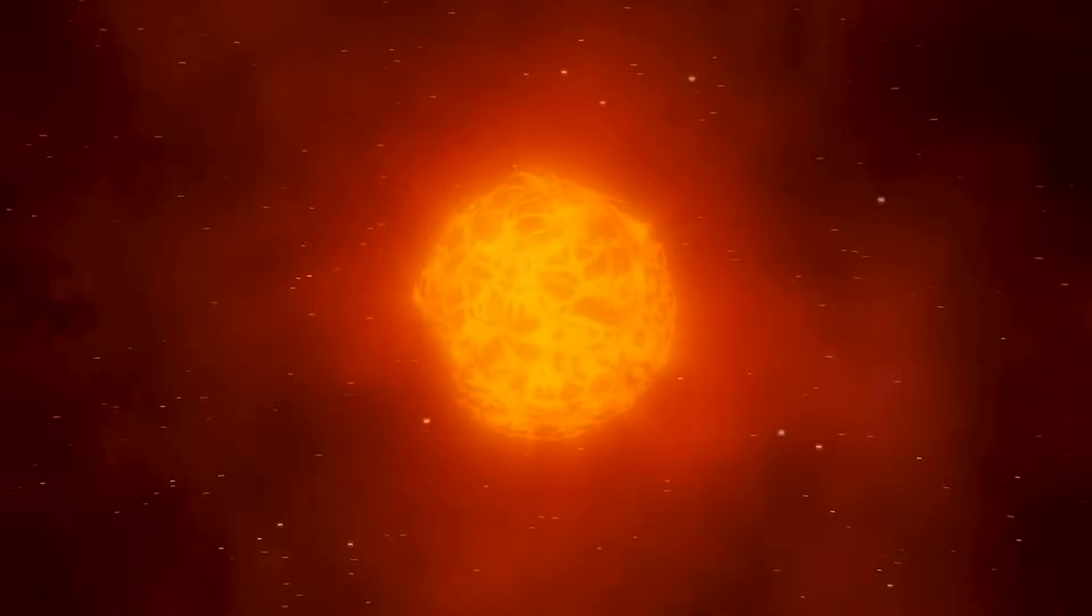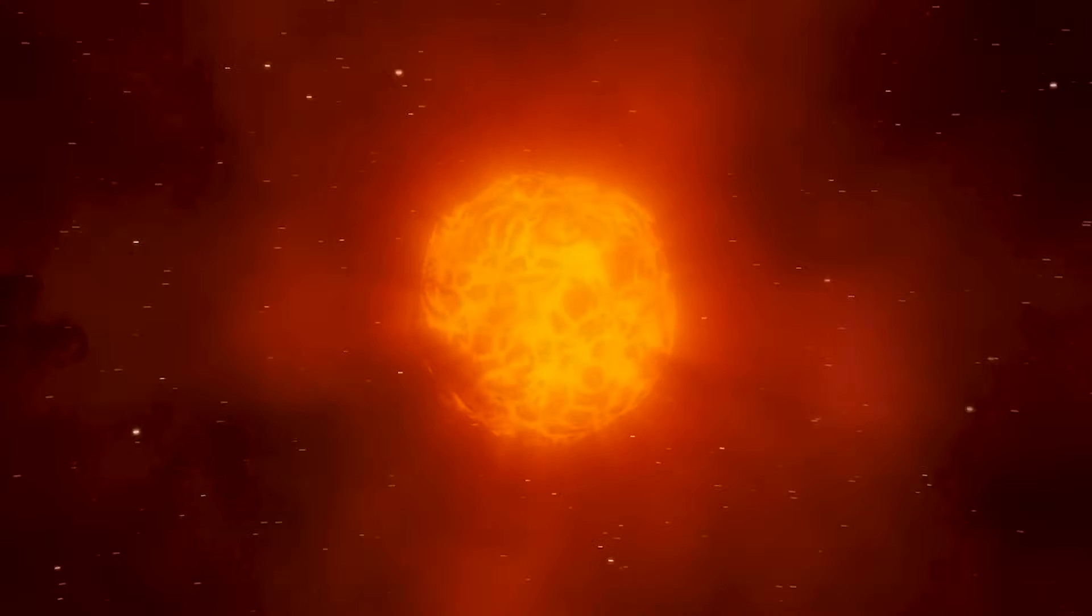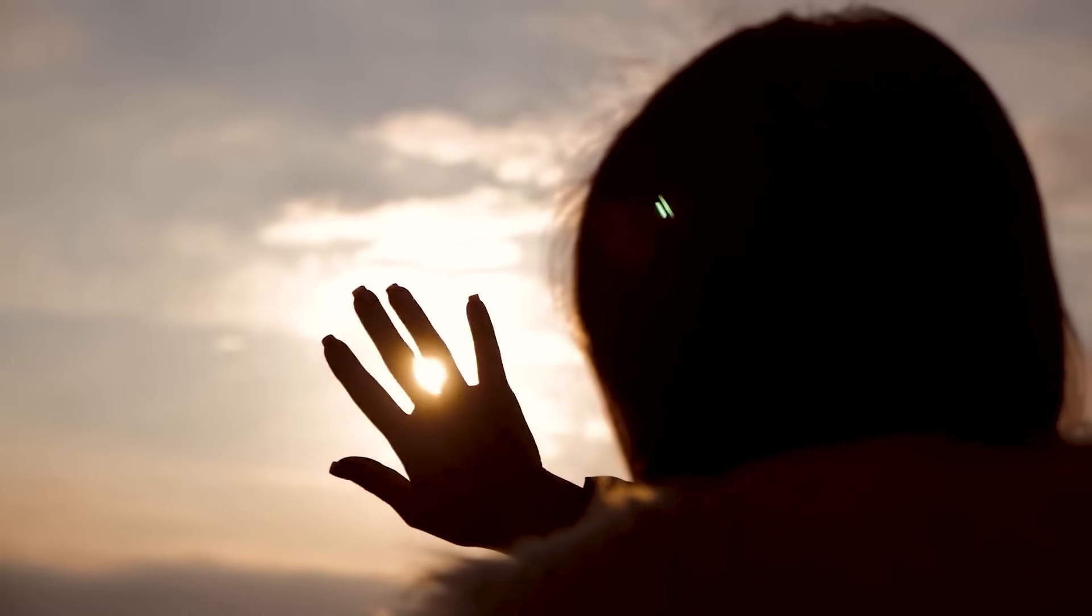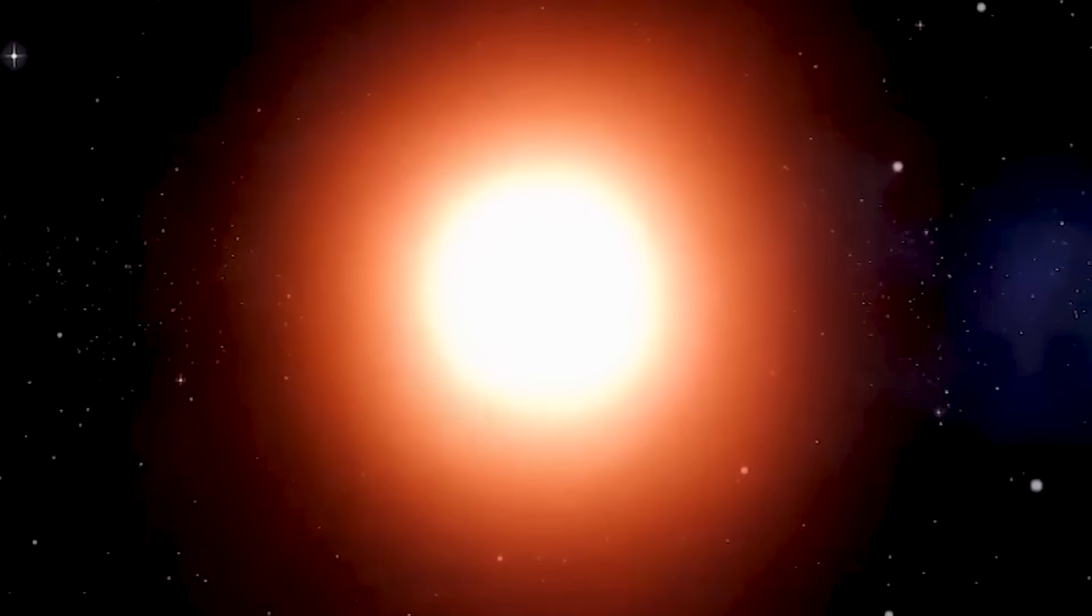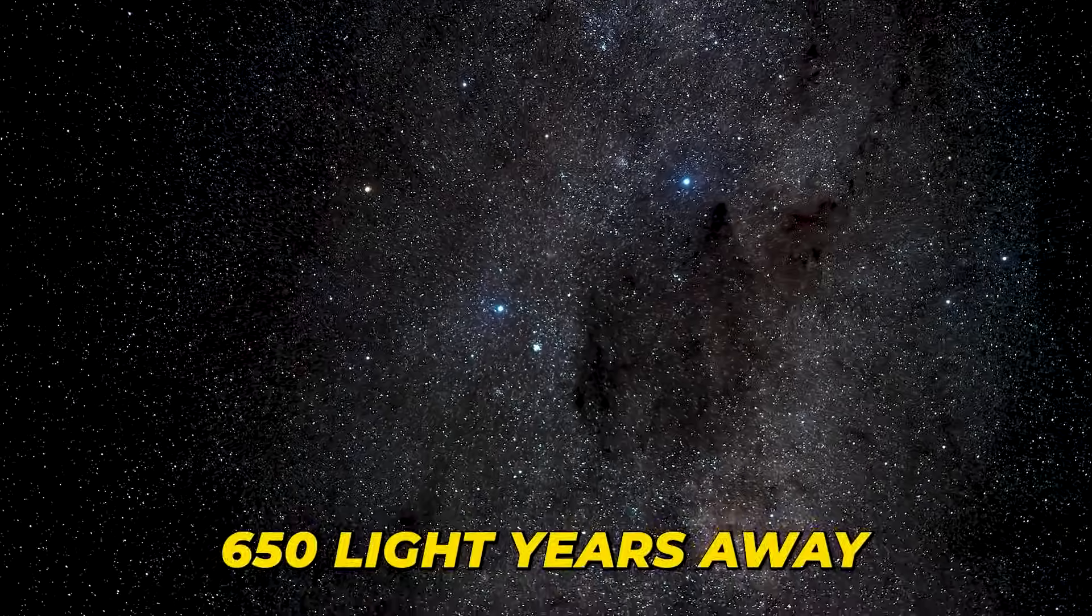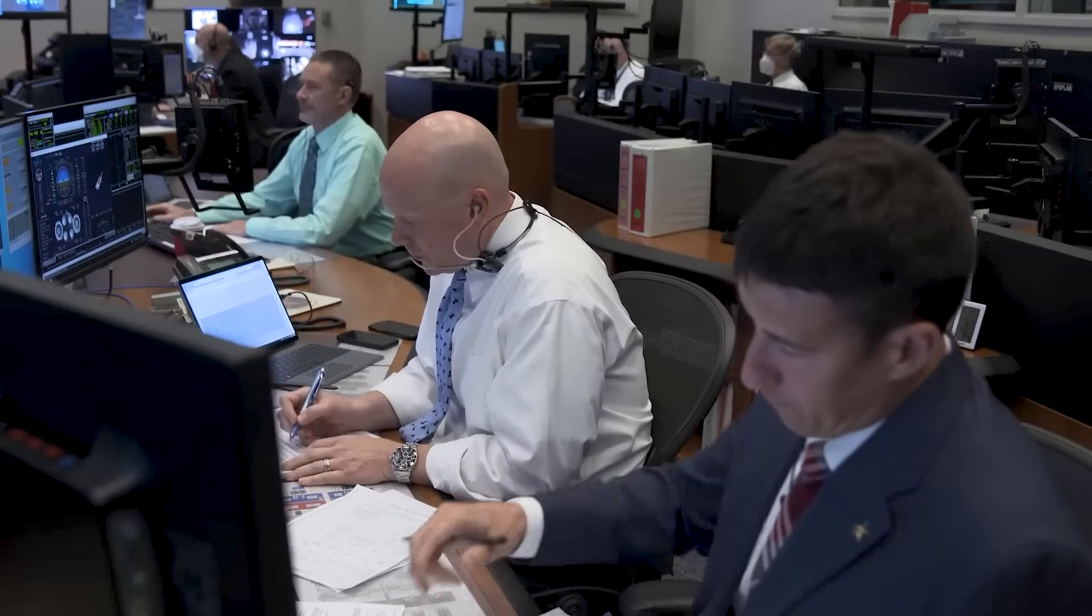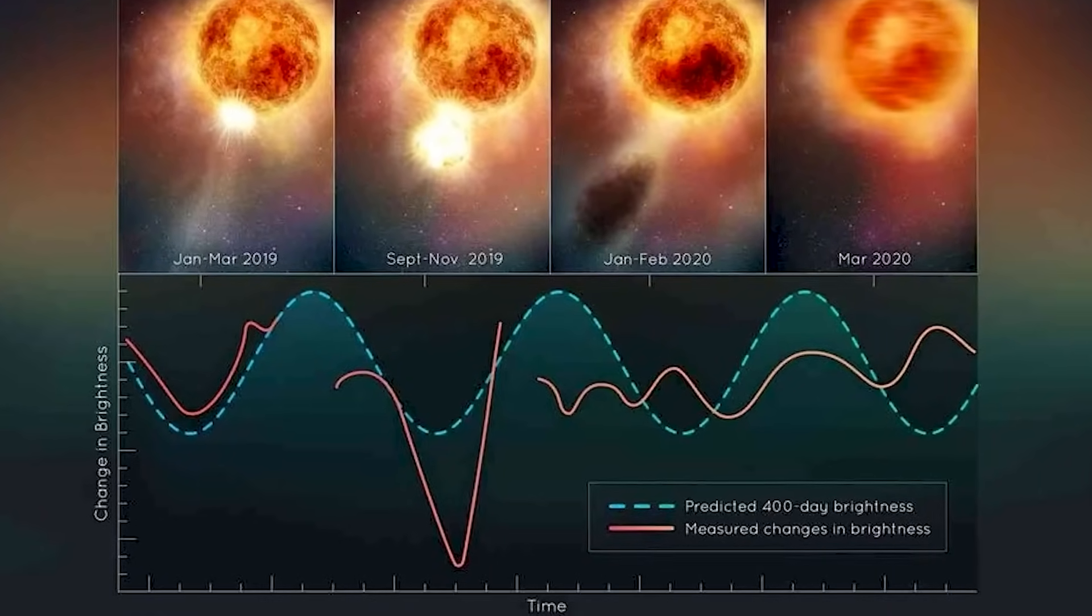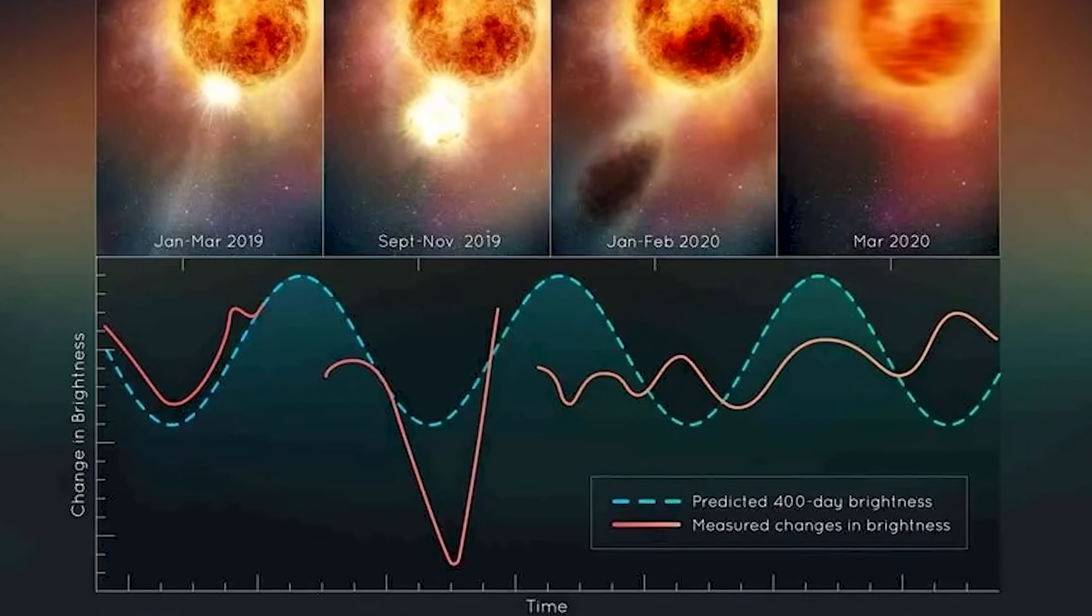Its luminosity is equally astonishing, emitting approximately 100,000 times more light than what we get from the sun. Although Betelgeuse is situated approximately 650 light years away from Earth, it is an intriguing object for astronomers to study due to its relative proximity in astronomical terms. We can easily observe this fascinating star using telescopes.